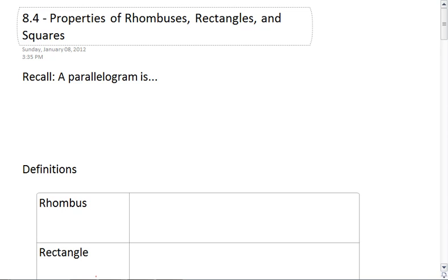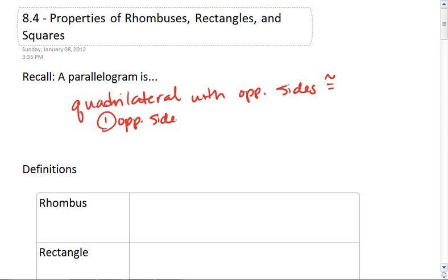So first, recall a parallelogram, which is what we've been talking about so far, is a quadrilateral with opposite sides congruent. We also know that this means that opposite sides of a parallelogram are parallel.